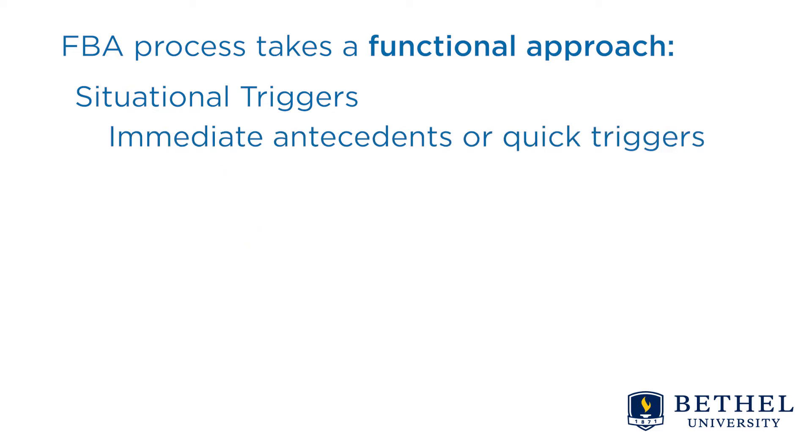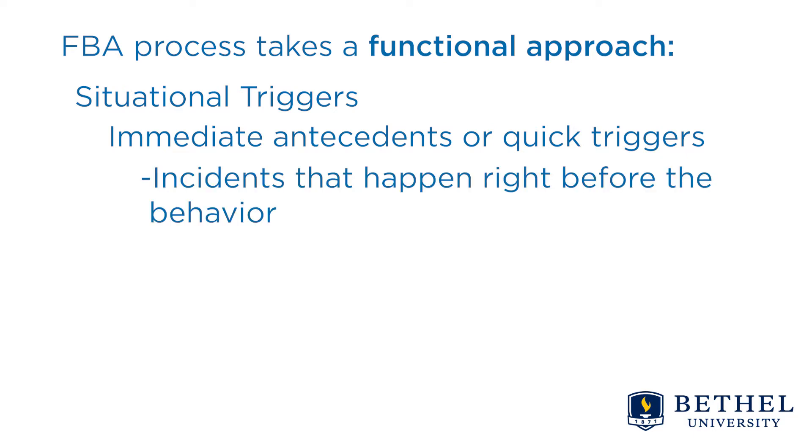Immediate antecedents, or quick triggers, include incidents that happen right before the behavior, such as an altercation on the bus or on the ride to school with a parent, someone running into them in the hallway, or finding out they didn't prepare for an exam or do well on an assignment.